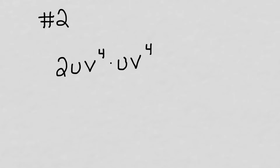Number two: we're looking at two u v to the fourth times u times v to the fourth. We've got three things going on here — the coefficients, which are numbers, and two different variables, u and v. Let's do the coefficients first: we've got a coefficient of two. Now the u's: u times u gives us u squared. And v to the fourth times v to the fourth — we add exponents and end up with v to the eighth.